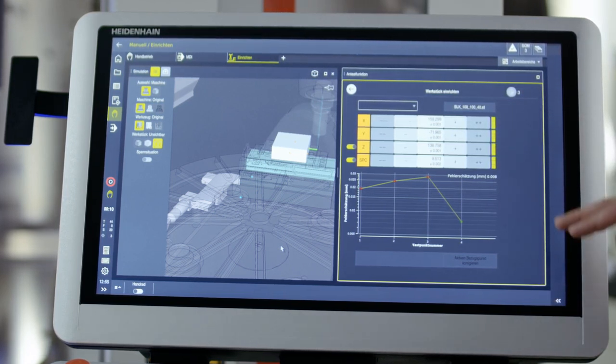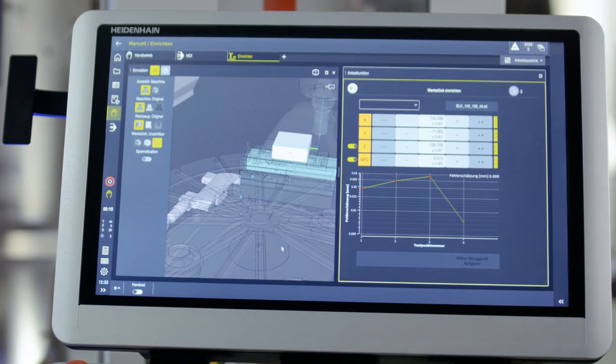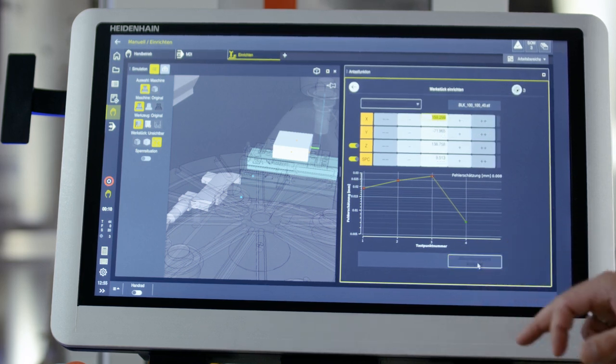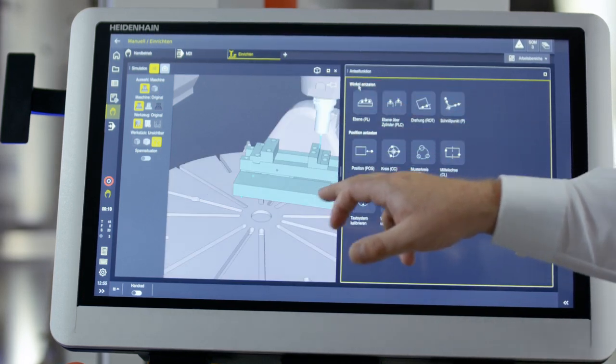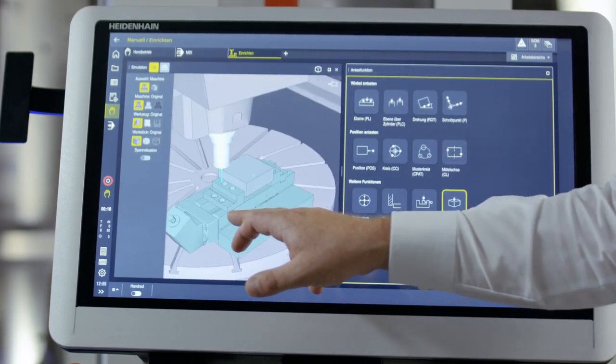Now I can see with the traffic lights, as well as down here in the diagram, that the measuring points fit together well. I can compensate with the active preset, save the preset directly, and the workpiece has now been probed completely.